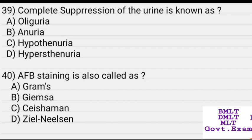Complete cessation of urine production is known as? Options: oliguria, anuria, hypostenuria. Answer: Anuria.